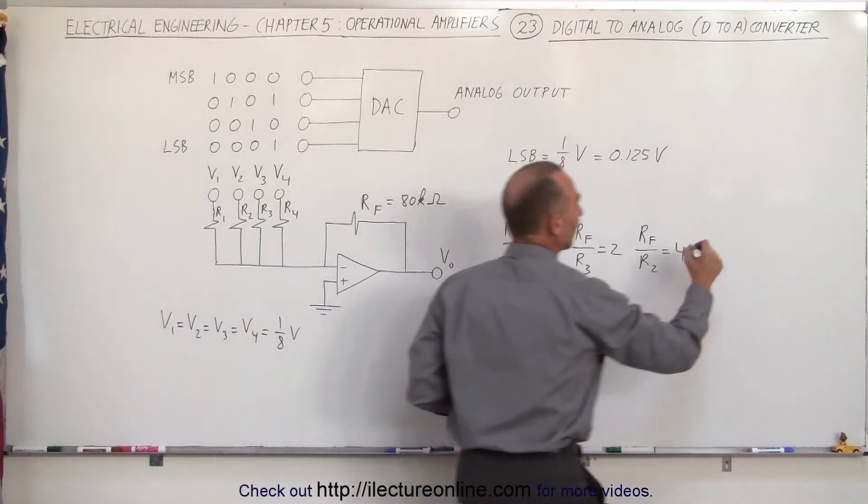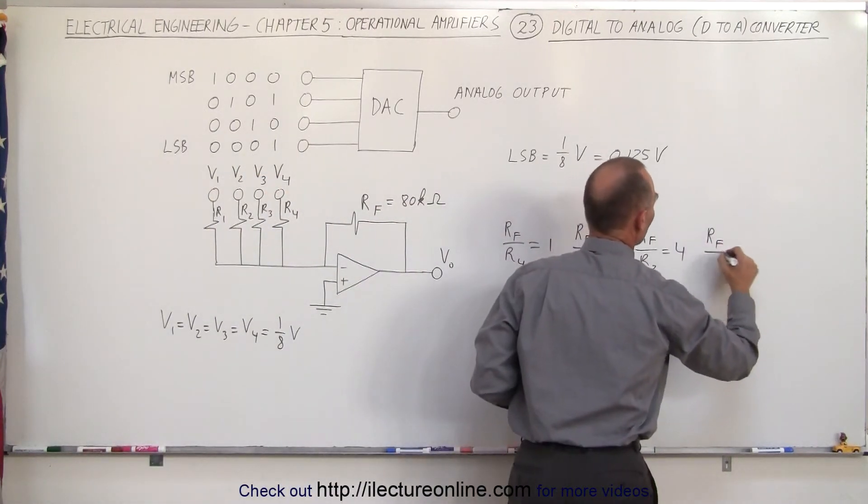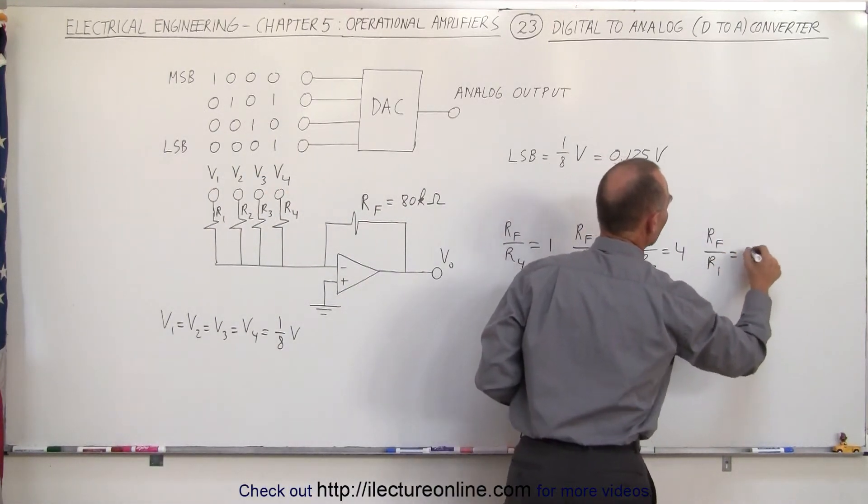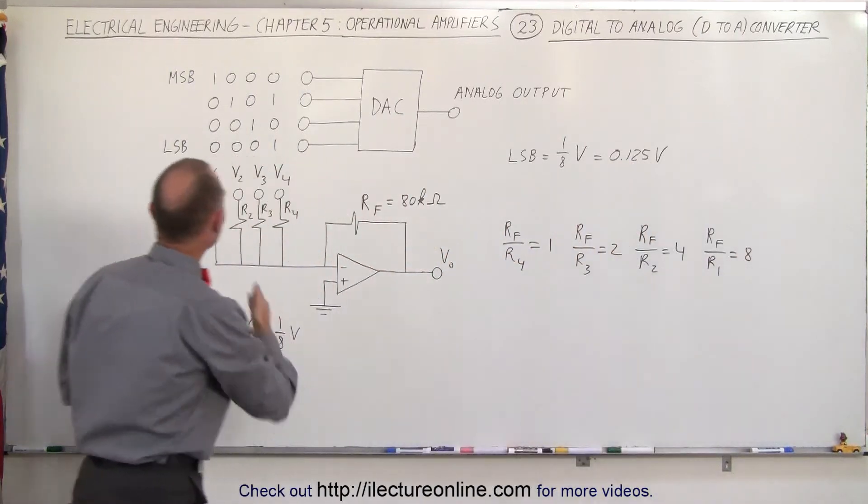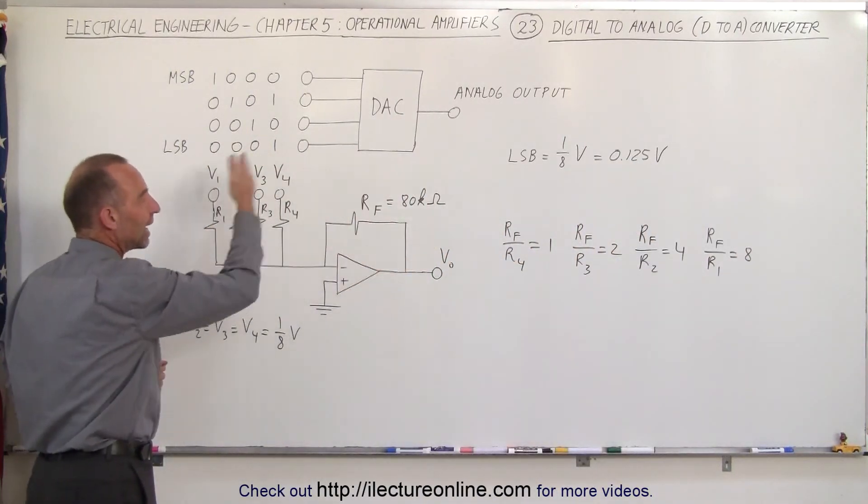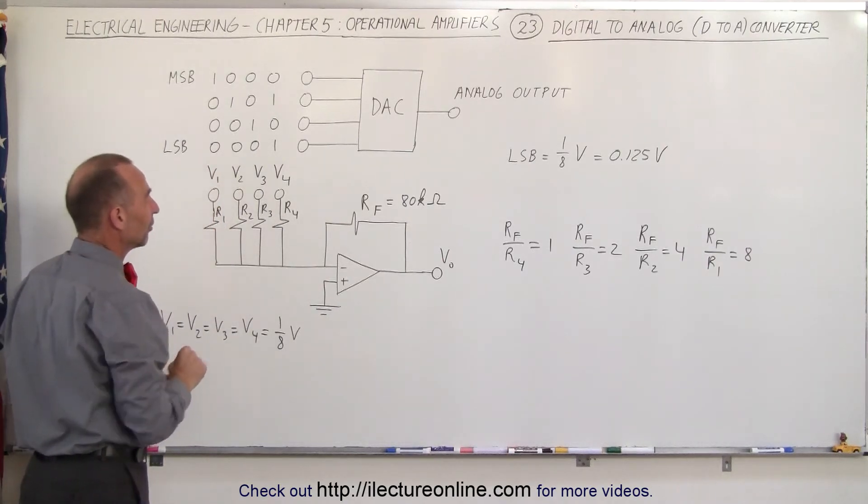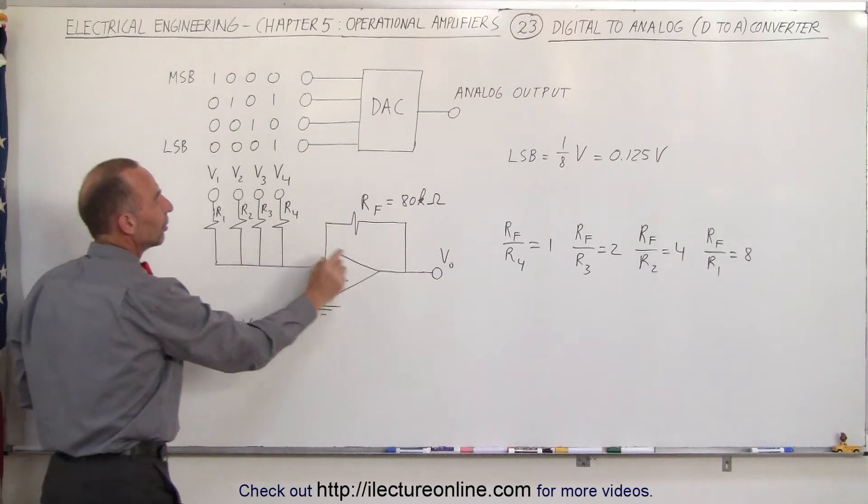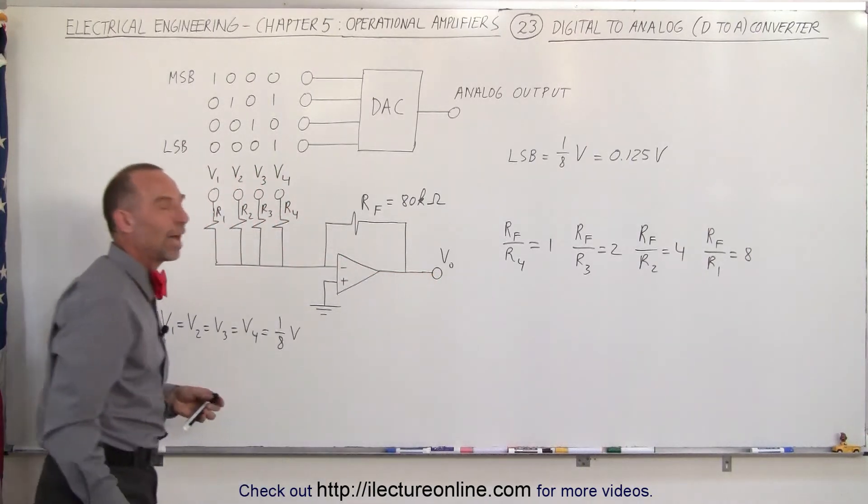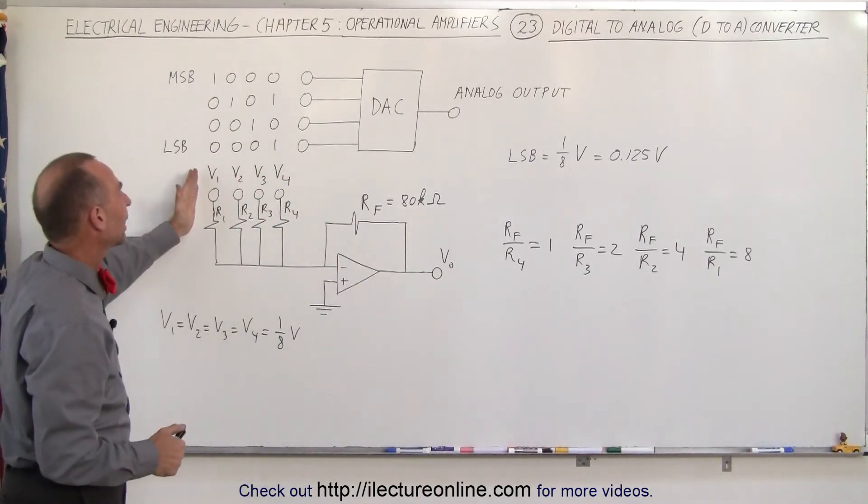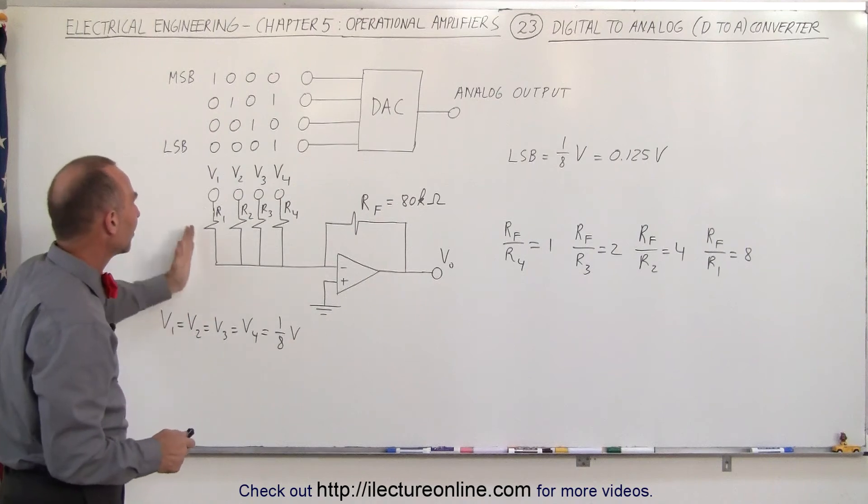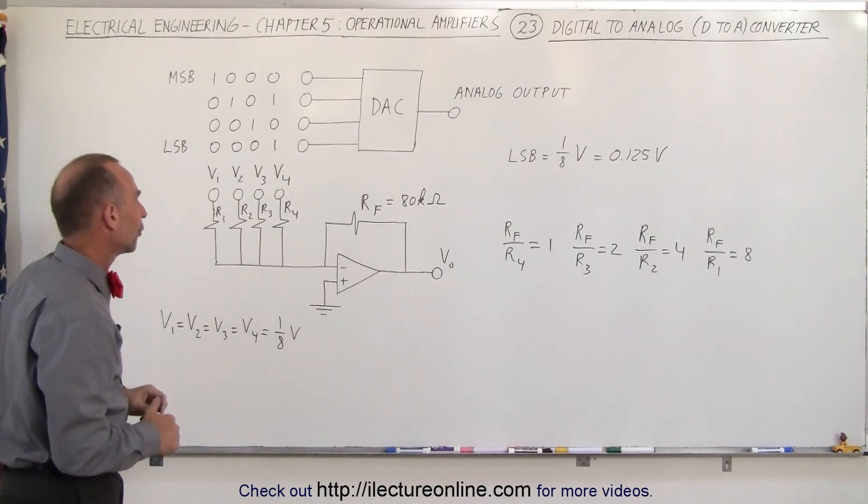And finally, if we make the ratio of RF to R1 equal to eight, then if one eighth of a volt comes in on V1, we multiply that times eight, or amplify it by a factor of eight, that makes that into a one volt input. All these then get added together to get a single voltage output. That's how we get a digital to analog conversion, by simply summing up the inputs on the four voltages.